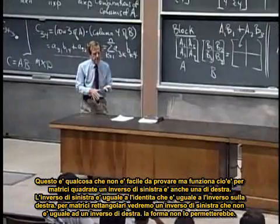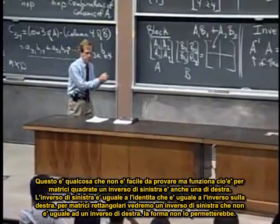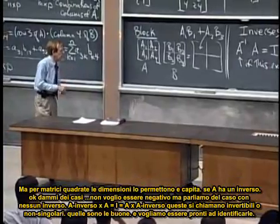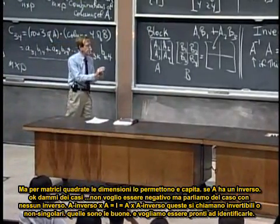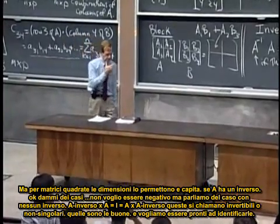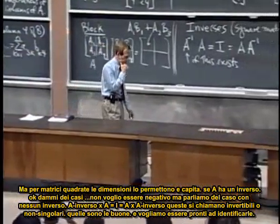For rectangular matrices, we'll see a left inverse that isn't the right inverse. In fact, the shapes wouldn't allow it. But for square matrices, the shapes allow it, and it happens, if A has an inverse.